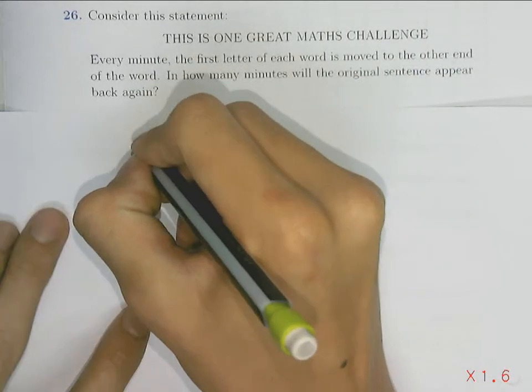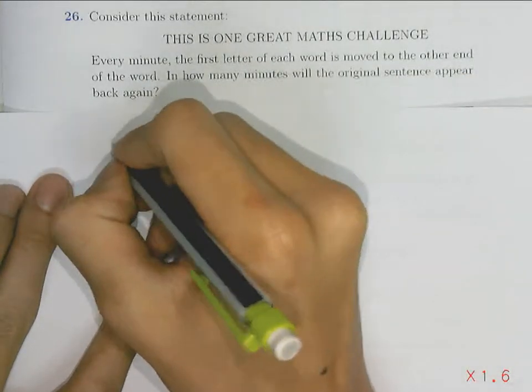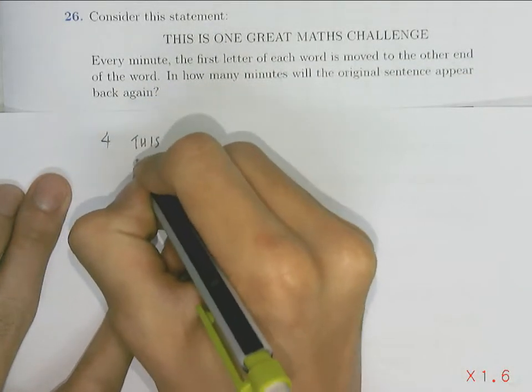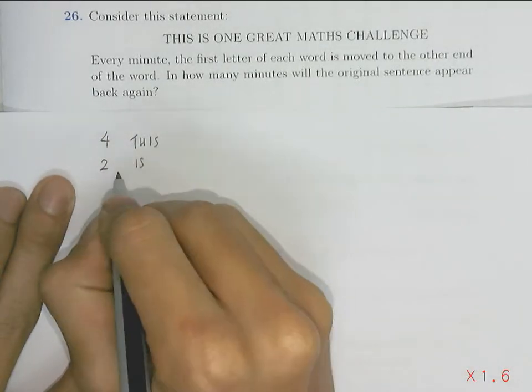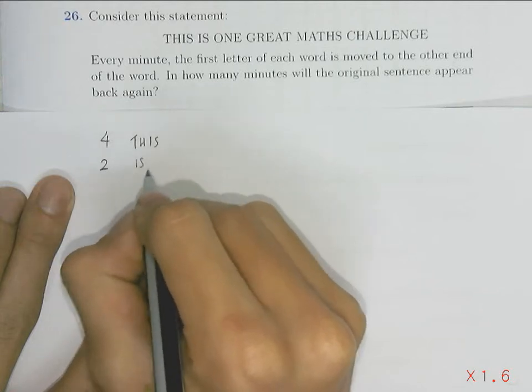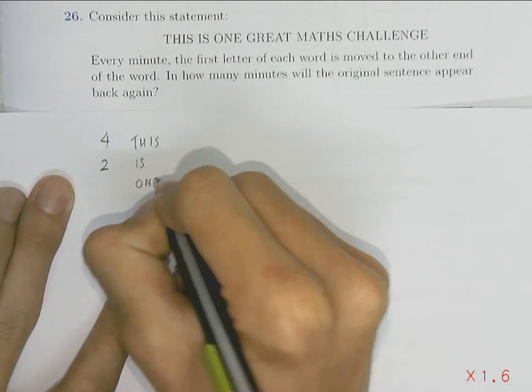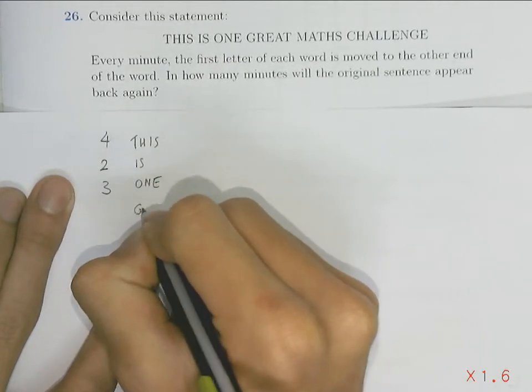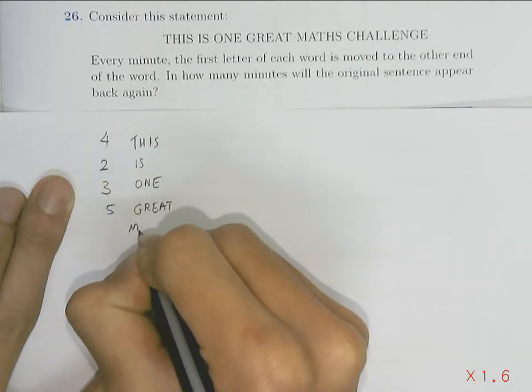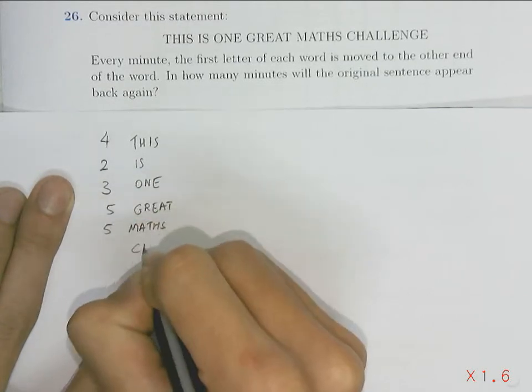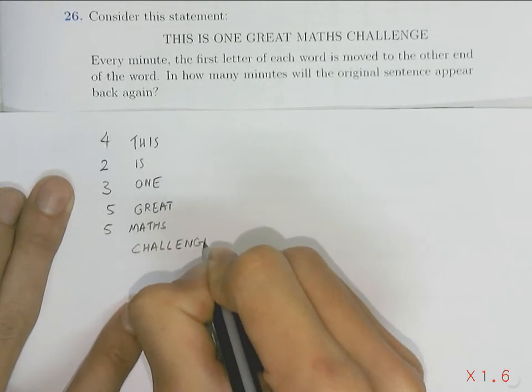So the word 'this' is a four letter word. The word 'is' is only a two letter word so every two minutes it will change back into the original word itself. 'One' is a three letter word. 'Great' is a five letter word. 'Maths' is also a five letter word. 'Challenge' is a nine letter word.